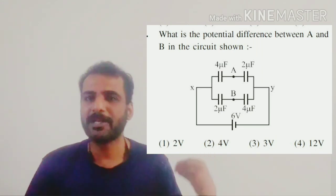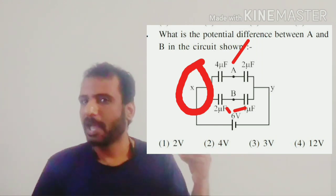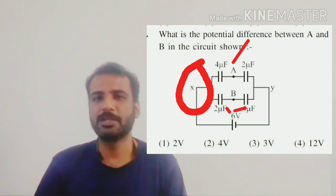The only thing is that we select a common point X and find the potential difference between X and A, X and B and subtract the two equations. Then we can end up saying VA minus VB.